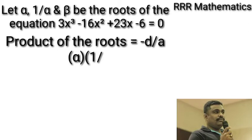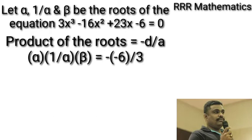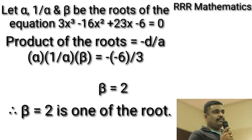That is, α × (1/α) × β = -(-6)/3. Alpha cancels, therefore β = 2. Therefore, β = 2 is one of the roots.